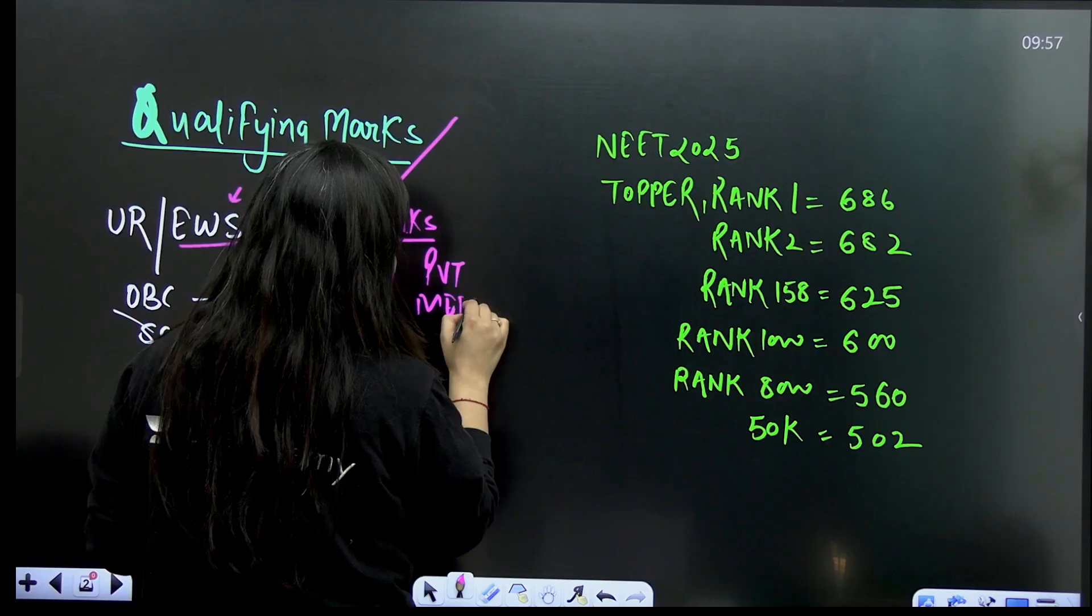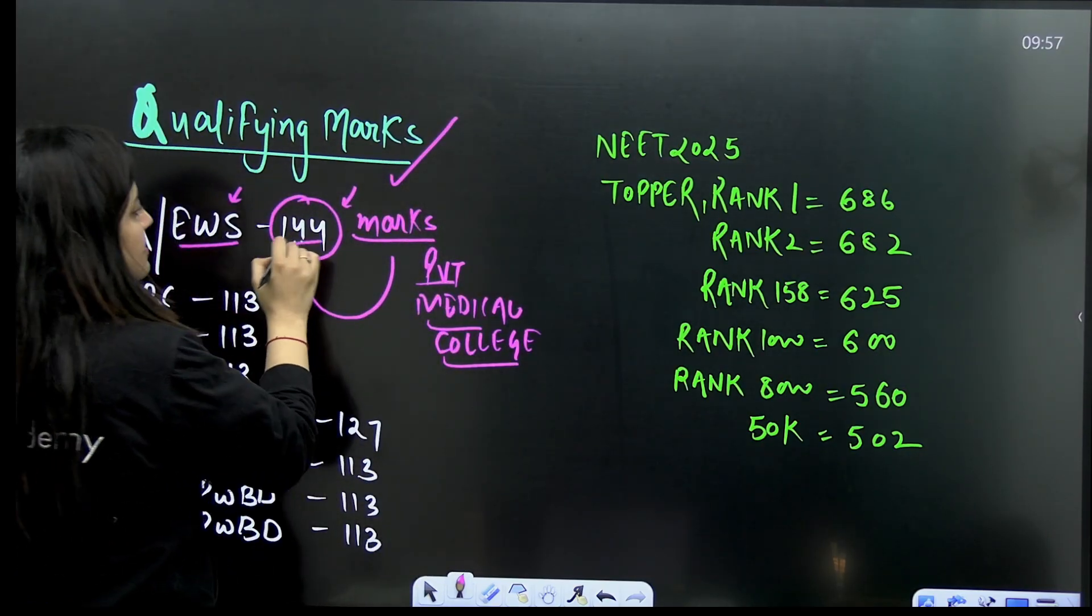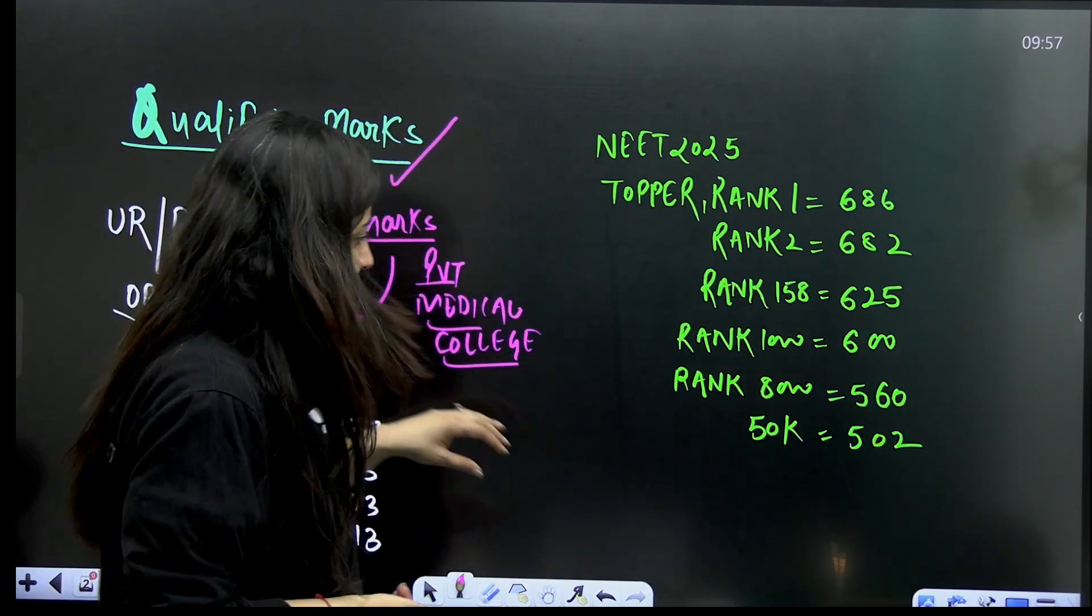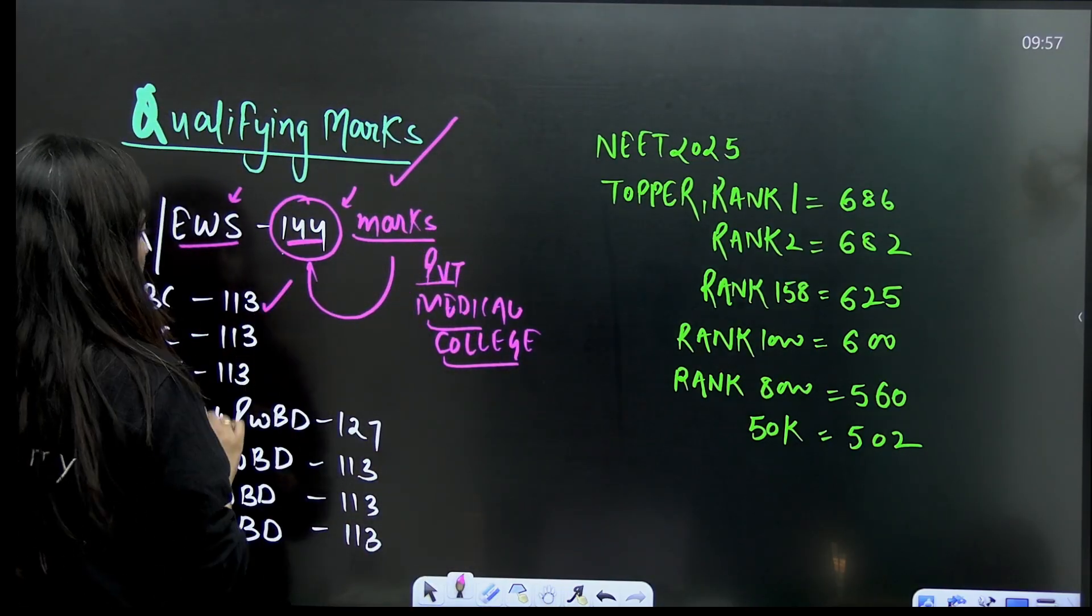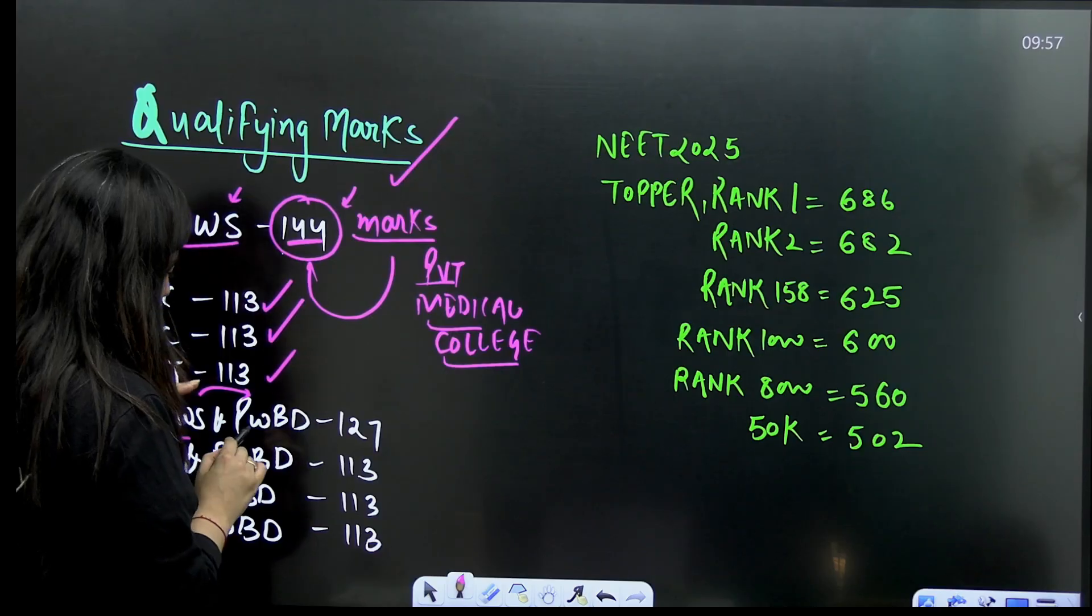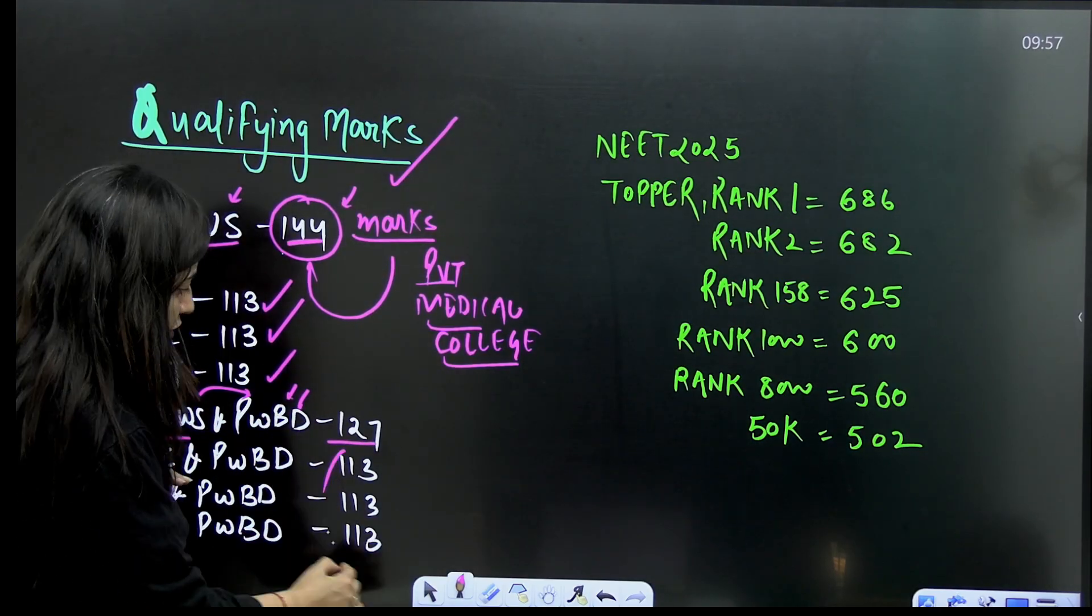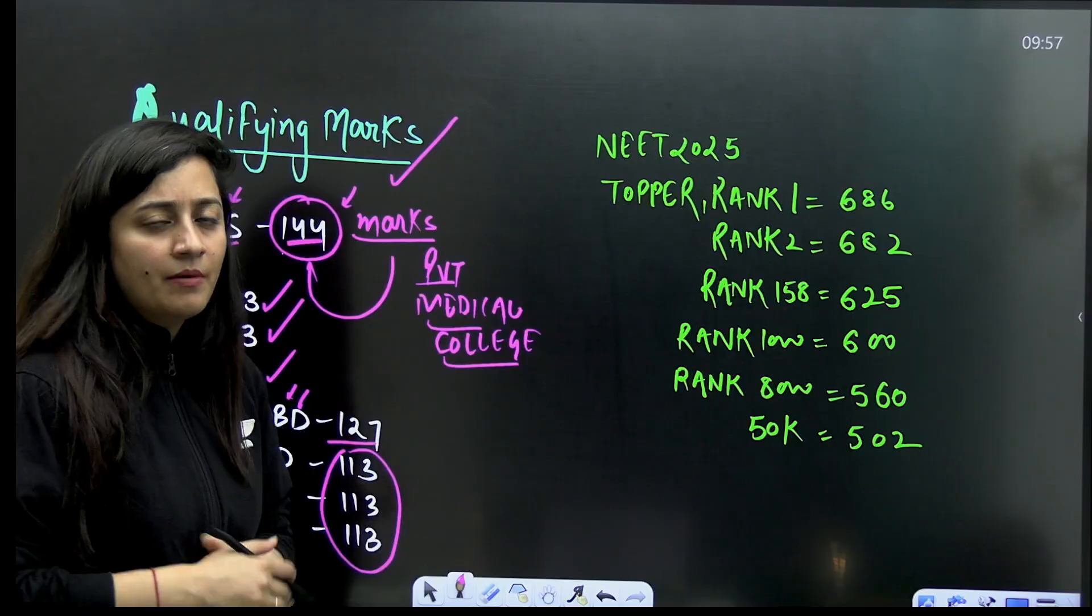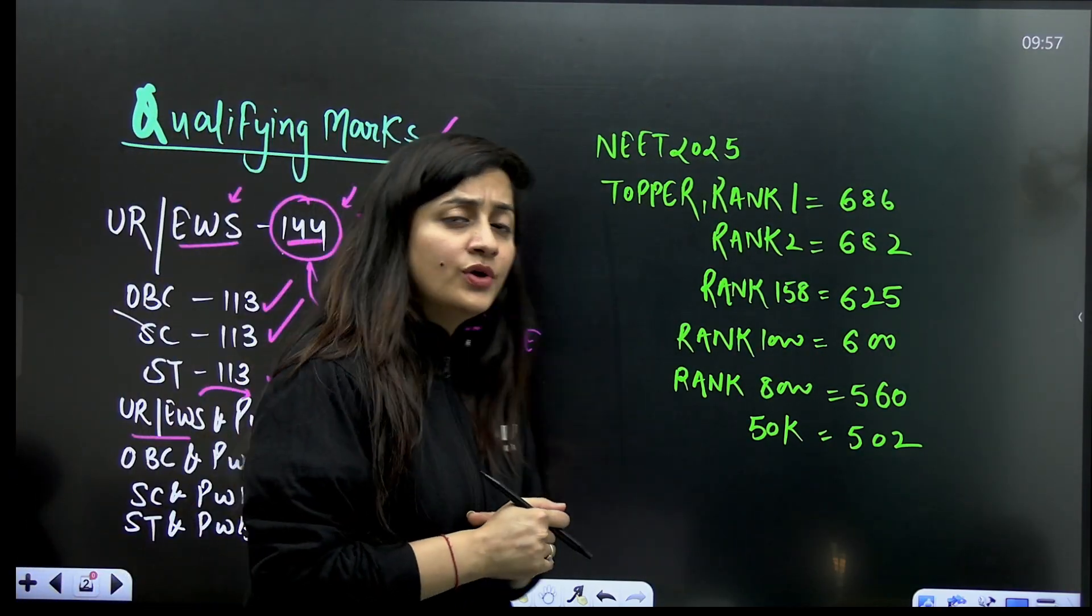This is the minimum mark you need to score. I'm not saying everybody can afford private medical college, but if somebody can, this is the range. For OBC 113, for SC/ST also 113, unreserved PWD (person with benchmark disability) 127 marks. This is the minimum mark you need to qualify this exam.